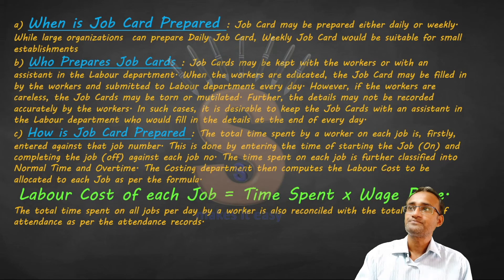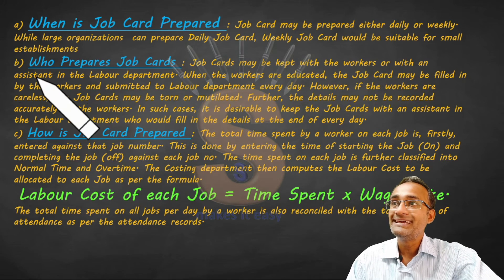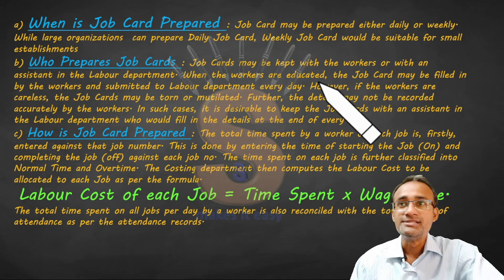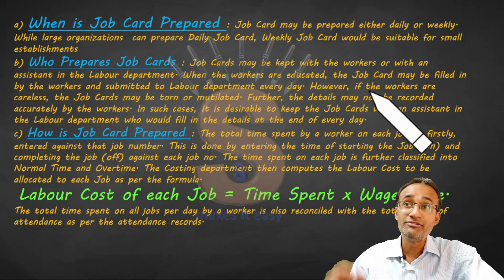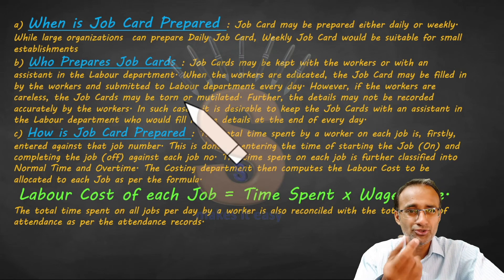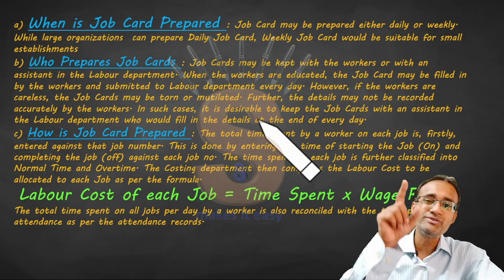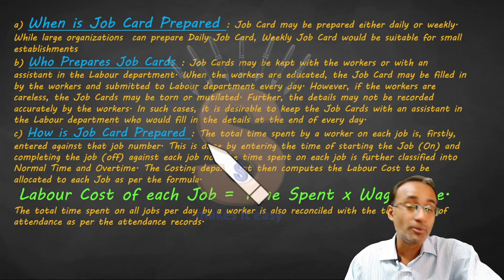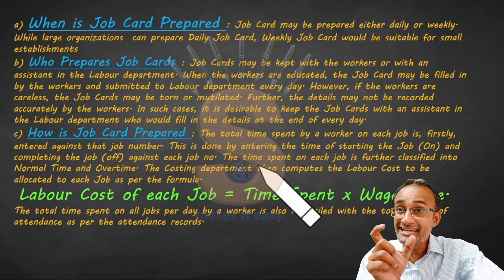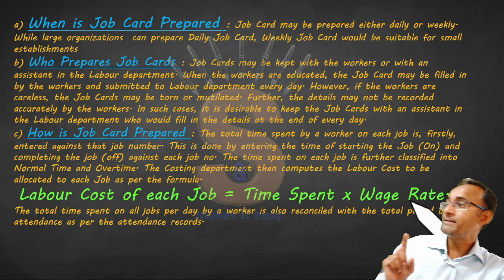There is a job card for each worker, also called a job ticket, because it keeps a record of all the tasks and jobs he is performing. When a job card is prepared — who prepares it depends on the situation. Job cards may be kept with the workers or with an assistant in the labor department. When workers are educated, the job card may be filled by the workers and submitted to the labor department every day. However, if laborers are careless or uneducated, the job cards may be torn or mutilated, and details may not be recorded correctly. In such a situation, it is better to keep dedicated staff responsible for preparing them.